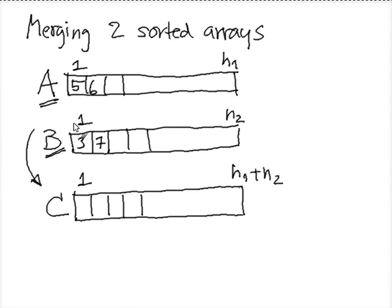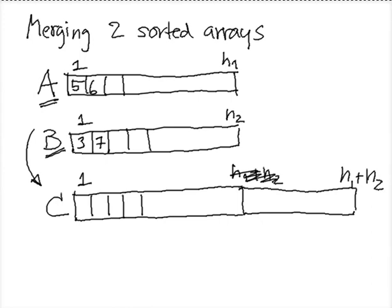We're not going to merge them in place, so we merge them into another array. Ideally, pictorially, it should be bigger. So the way we do it is that we're going to maintain three indices: I and J and K.